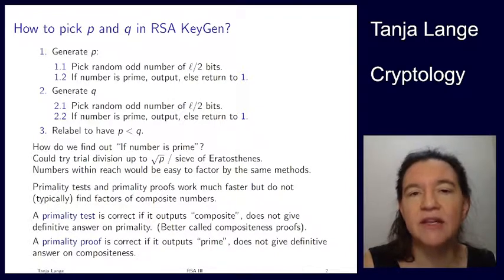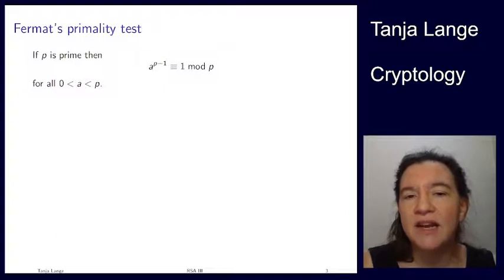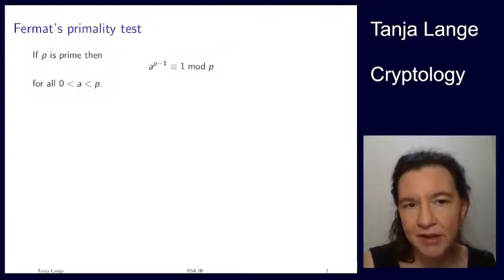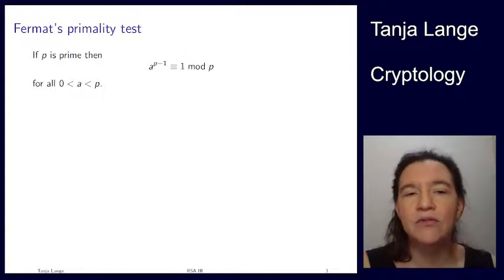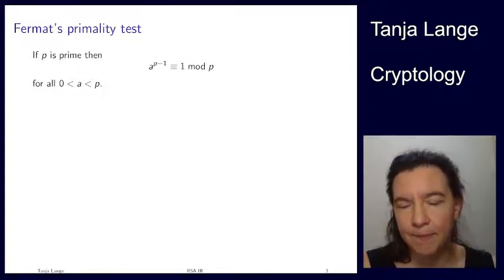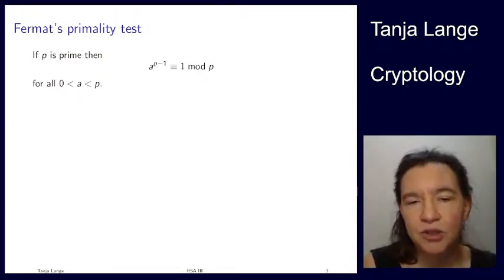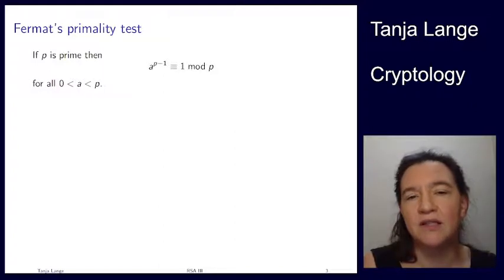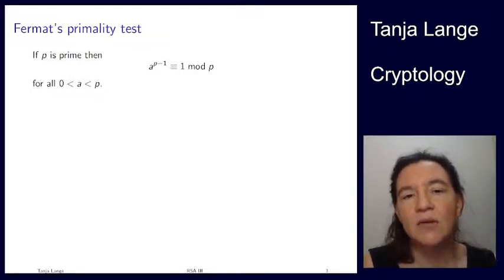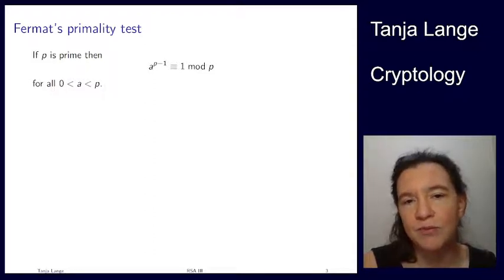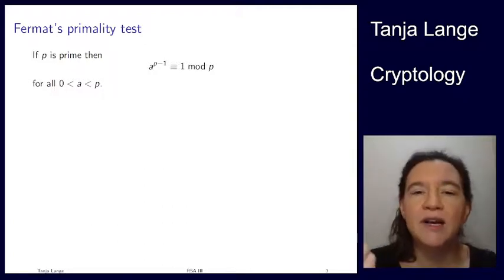Let's start with primality tests, and here's one you've probably seen before: Fermat's primality test. If p is prime, then Fermat's Little Theorem tells us that a to the p-minus-1 is congruent to 1 mod p. This holds for all a between 0 and p. We've used this in the RSA encryption explanation, there in the more general form of Euler's theorem, but here it's really just for primes. We can also view this as a defining property of primes, because doing the same with composite numbers like 4 or 6 will yield quite a few exceptions.